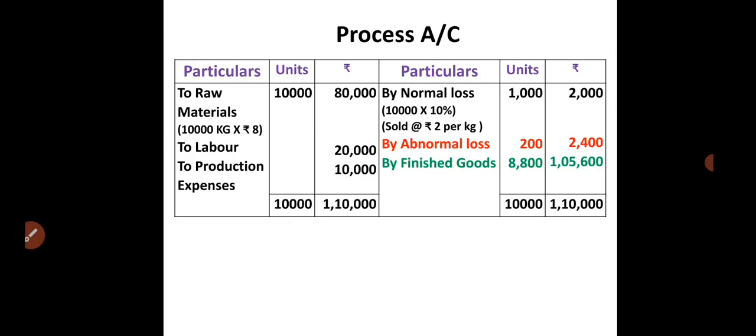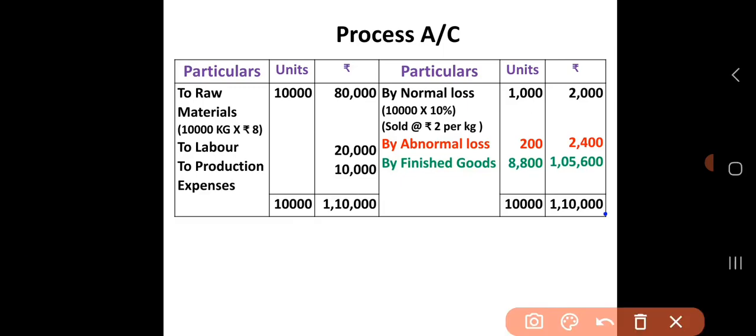On the debit side, we enter raw materials: 10,000 kgs at Rs. 8, so 10,000 units in the units column and 10,000 × 8 = Rs. 80,000 in the Rs. column. Then we add labor Rs. 20,000 and production expenses Rs. 10,000. That completes the debit side.